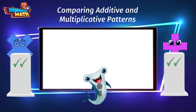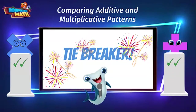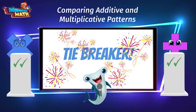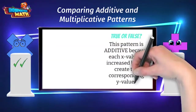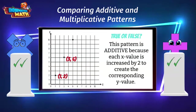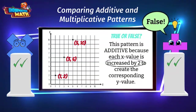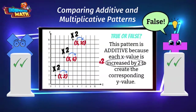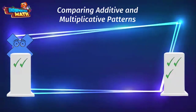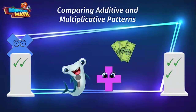This means it is time for our exhilarating tiebreaker round. Buzz in ready, contestants. True or false? This pattern is additive because each x value is increased by 2 to create the corresponding y value. Addy, what is your answer? False. Increased by 2 means that 2 is being added to each x value to get the y value, and this is clearly not the case. Each x value is being multiplied by 2 to get the y value, so this pattern is multiplicative. Addy, you are our winner for comparing additive and multiplicative patterns. Congratulations.